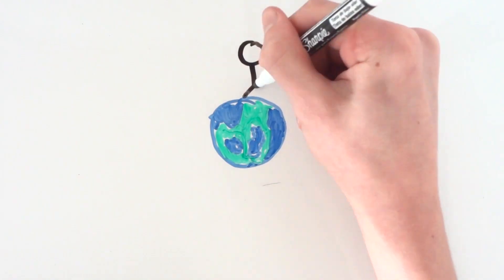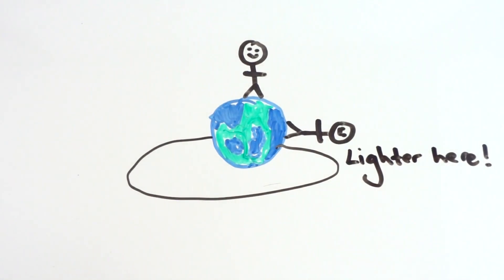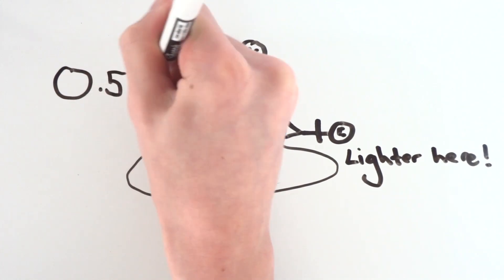You will also weigh about 0.5% more at the poles than the equator due to centripetal acceleration, but 0.5% is quite small in reality.